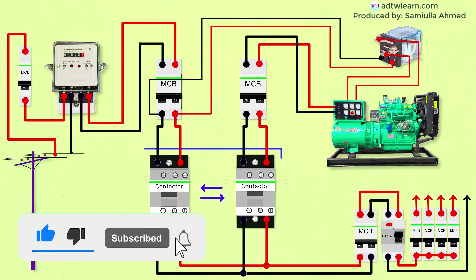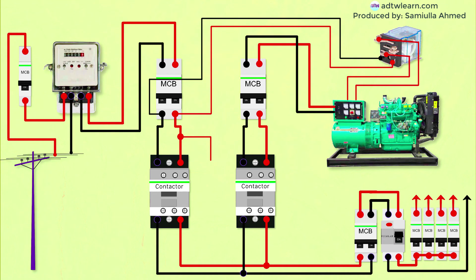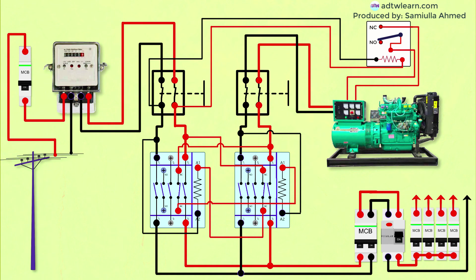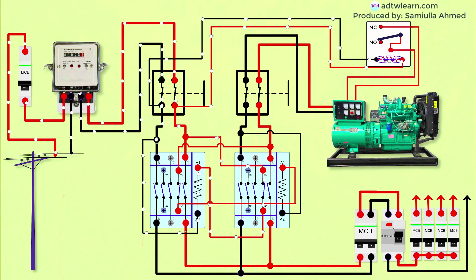Next we need to interconnect these two contactors. Case 1: when the electric supply from the pole is on, this is how the current will flow in the circuit. The supply from the electric pole passes to the coil of the first contactor through the normally closed contact of the second contactor, thus energizing the first contactor coil and supplying current from the pole to the distribution board.